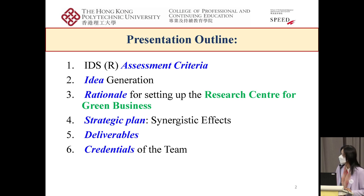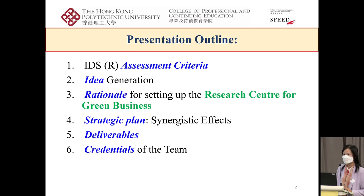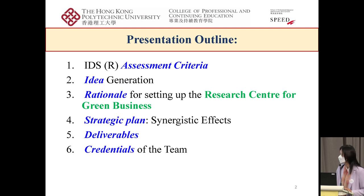Tonight I will present on six items. First is the IDS infrastructure grant assessment criteria. Secondly, idea generation. Third is the rationale for setting up the research center for green business. Fourth is the strategic plan about the synergetic effect of having this research center. Number five is the deliverables of our research center. And number six is the credentials of our team.